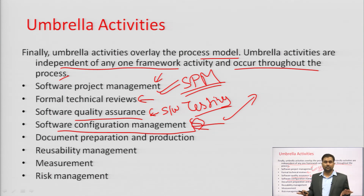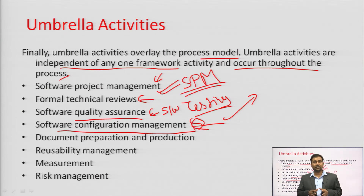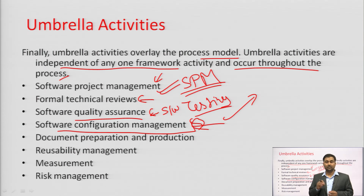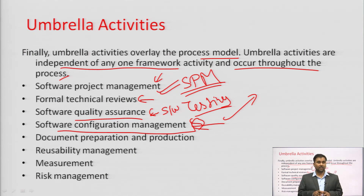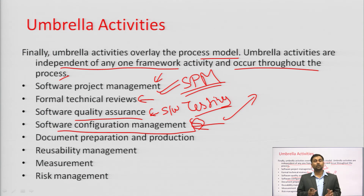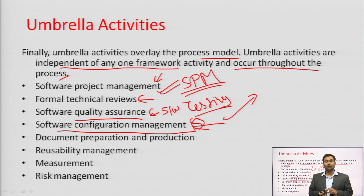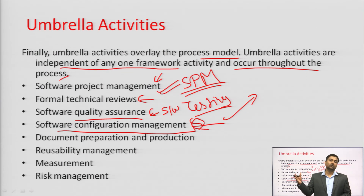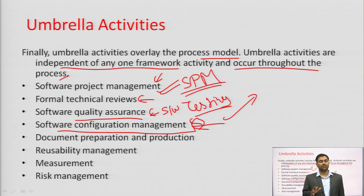Configuration management is important for all stakeholders — those directly or indirectly connected to a software project. For example, for a college website: parents are indirectly connected; students, faculty, teaching staff, non-teaching staff are directly connected — all are stakeholders with different requirements. The college website must run on different browsers: Opera, Mozilla, Chrome, Internet Explorer, Microsoft Edge. If not tested, some users may not be able to open the website — so compatibility testing is essential.